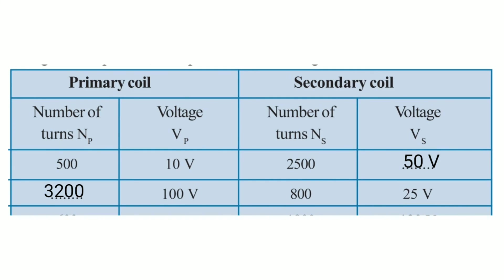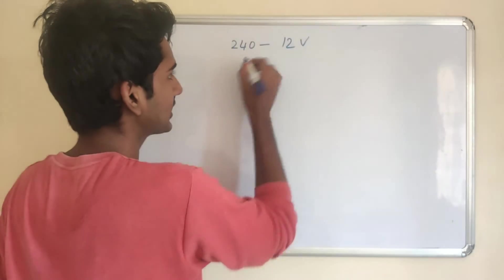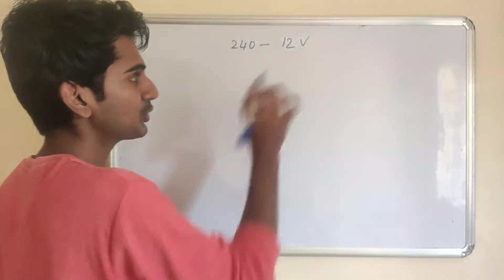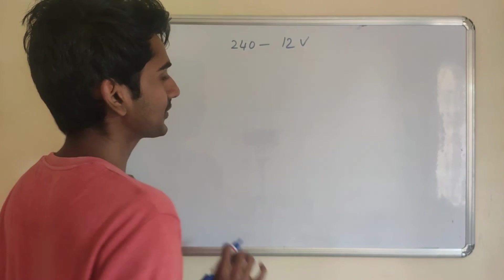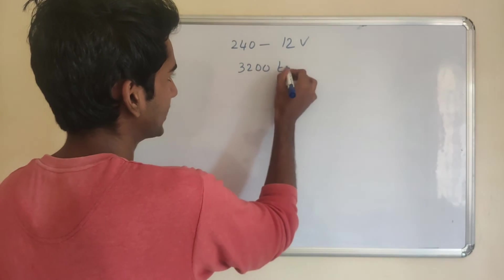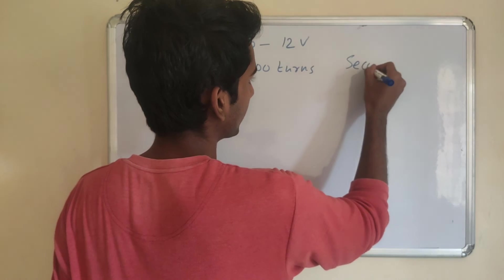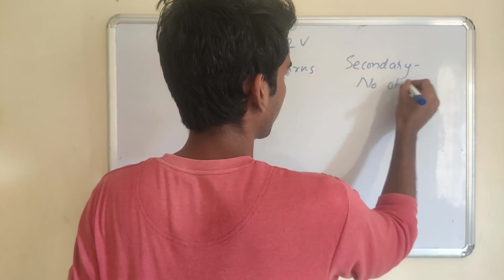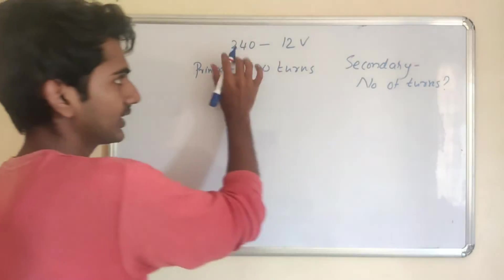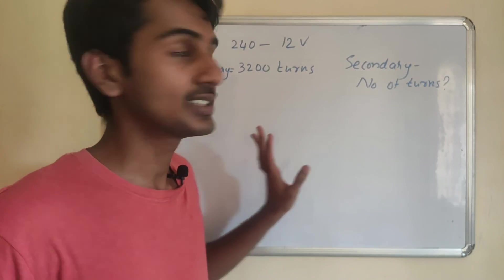Problem 2 (step-down transformer): A transformer converts 200V to 12V. We call the primary coil 300 turns. So Vp equals 200V, Vs equals 12V, Np equals 300 turns. We need to find the secondary number of turns Ns. Using Vs/Vp equals Ns/Np, we get Ns equals Vs times Np divided by Vp. This is the question — answer in the comment section.